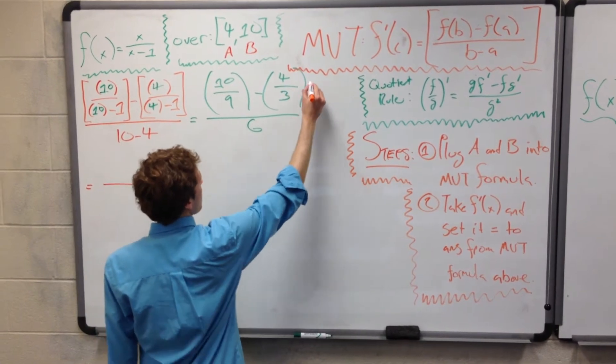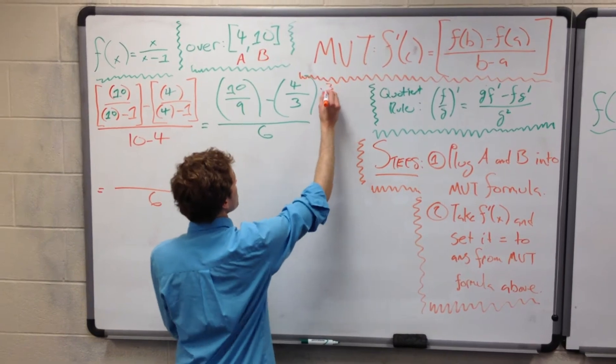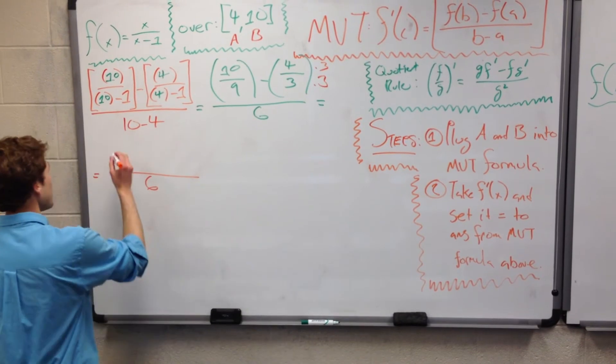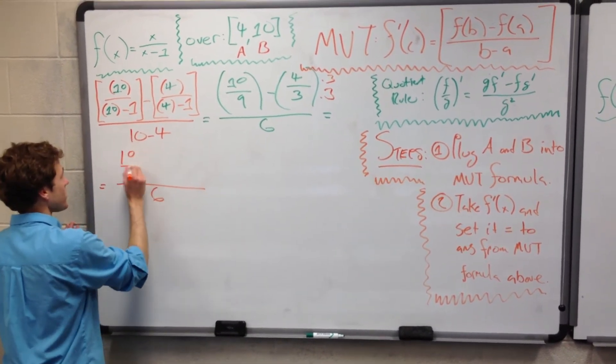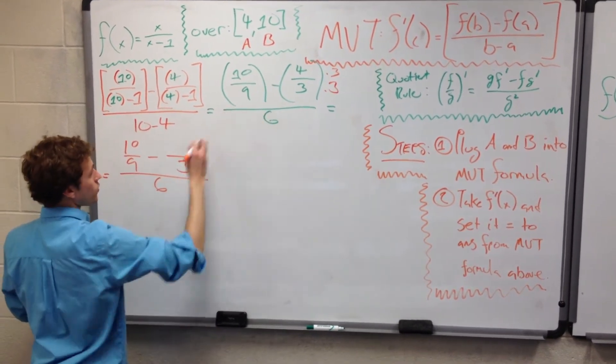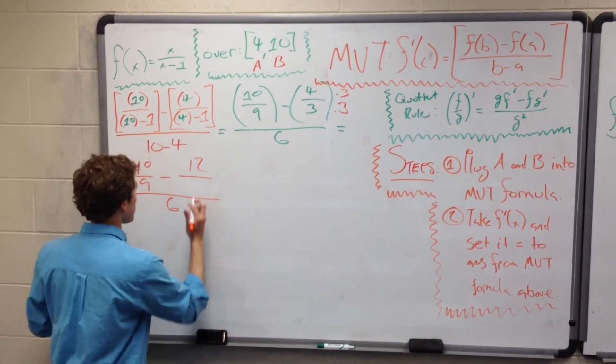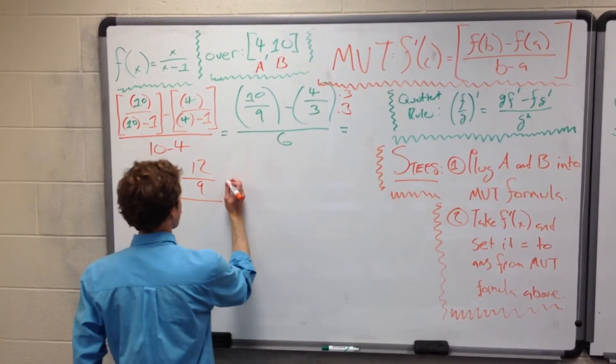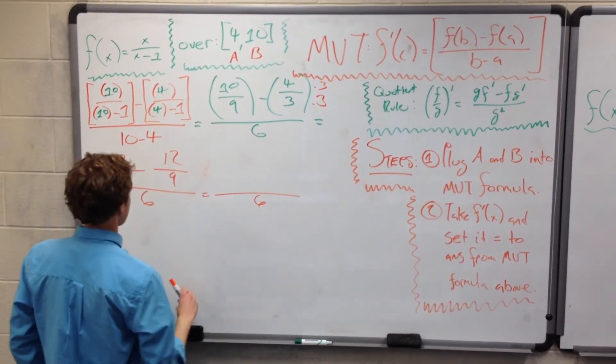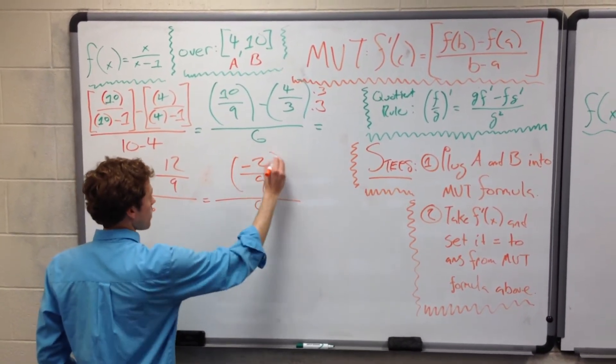So let's multiply both the numerator and the denominator by 3. Because 3 times 3 equals 9, we can have a common denominator. So this over here will stay as 10 ninths minus 3 times 3 is 9, 4 times 3 is 12. So we have 10 ninths minus 12 ninths. So all of this is negative 2 ninths over 6.